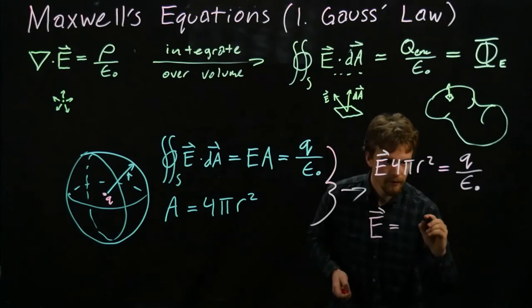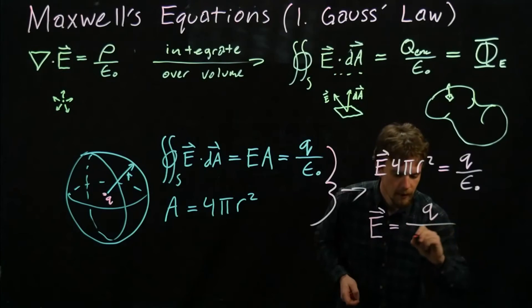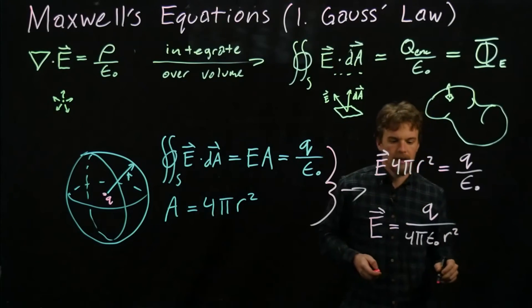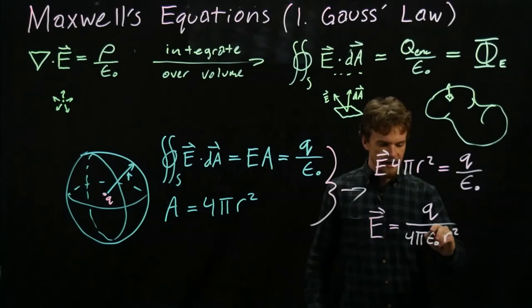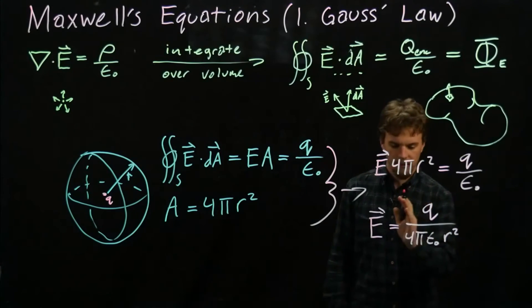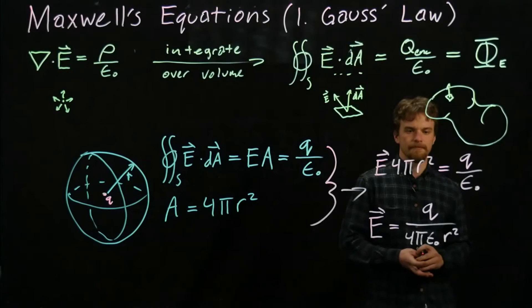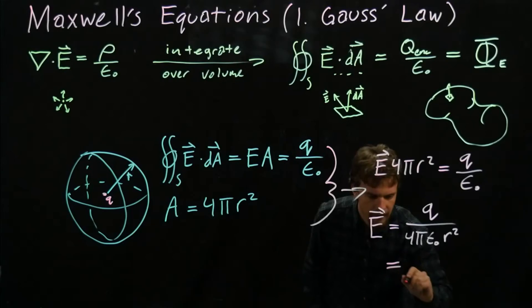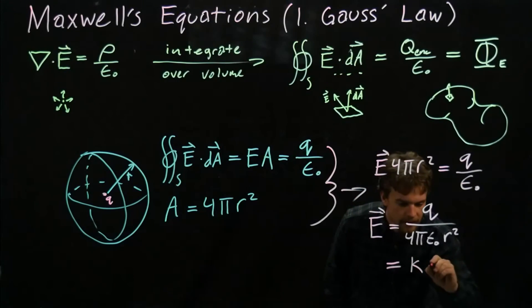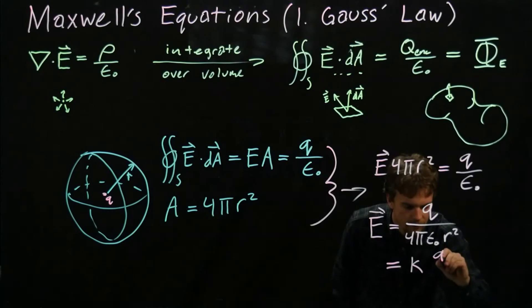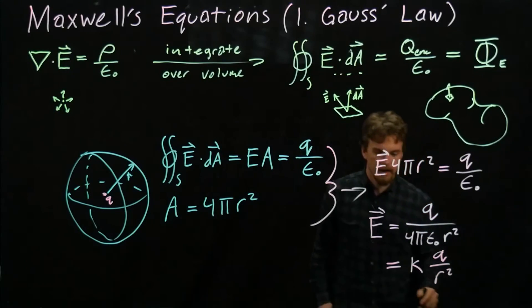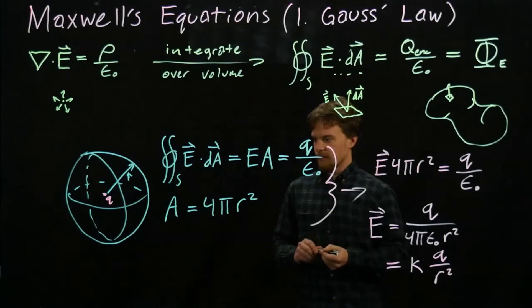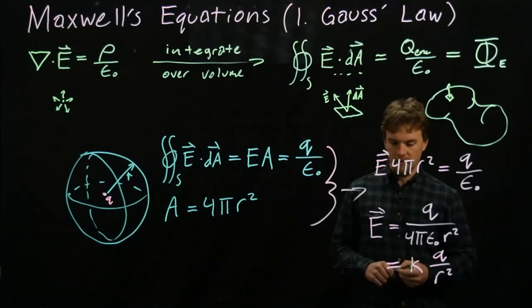We get that E is equal to q over 4πε₀r². Now 4, π, and ε₀ are all constants, so we'll pull one over 4πε₀ out—I think a lot of times it's called k—so k equals, and this becomes k times q over r². You'll find this equation in your physics book for the electric field at distance r due to a point charge q.